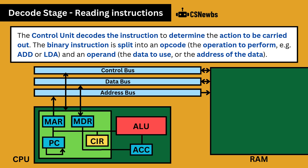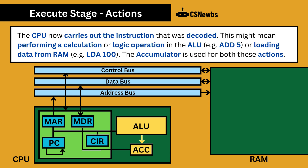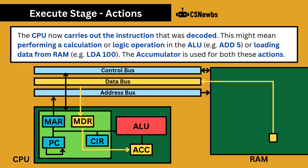We'll look at that again when we look at addressing modes and assembly language in section 2. The CPU now carries out the instruction that was decoded. This might mean performing a calculation or logic operation in the arithmetic logic unit, such as add 5, or loading data from RAM, such as load 100.